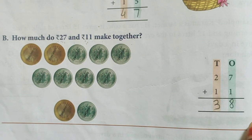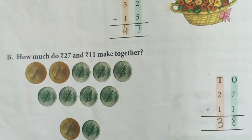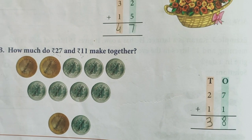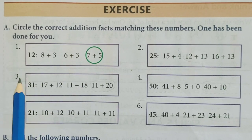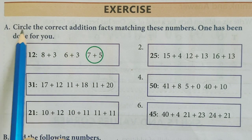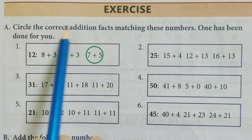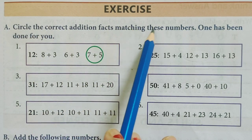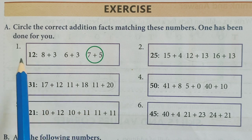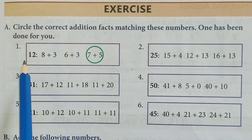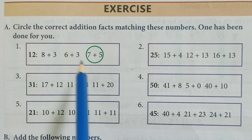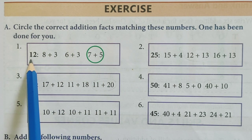This is all about Practice 3.7. Now we will see the Exercise. In Exercise, Question A: circle the correct addition fact matching the given number. Suppose we have to circle the correct matching addition for the number given.